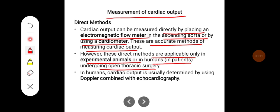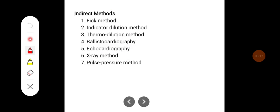In humans, cardiac output is usually determined by using Doppler combined with echocardiography. Some of the indirect methods of measurement of cardiac output are the Fick method, indicator dilution method, thermodilution method, ballistocardiography, echocardiography, x-ray method, and pulse pressure method.